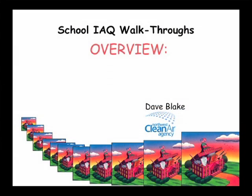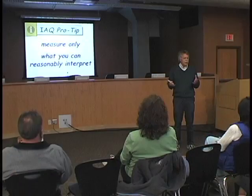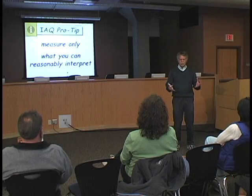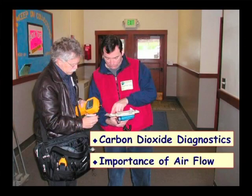I'll begin with a brief overview of some walkthrough basics — why we do them, where walkthroughs fit in the grand scheme of the school's formal indoor air quality program, and some basic points to remember when organizing and preparing to embark on your first one. You'll then see a presentation by my colleague Rich Prill, a building scientist with the Washington State University Extension Energy Program, covering two key areas: the use of carbon dioxide diagnostics to determine adequacy of fresh outdoor air ventilation, and the critical importance of airflow direction throughout the school.